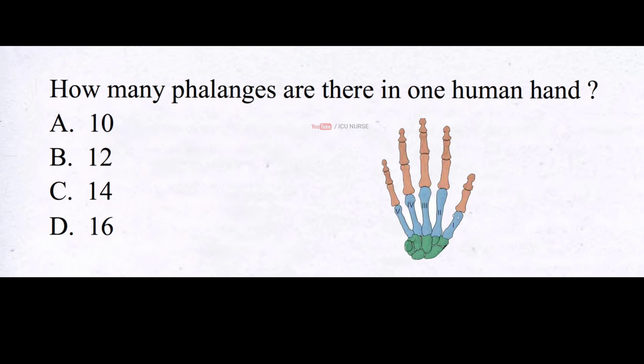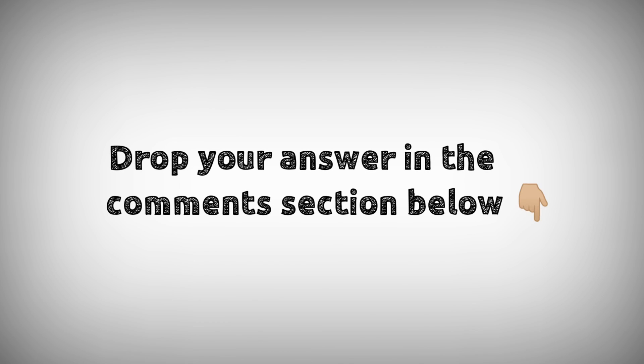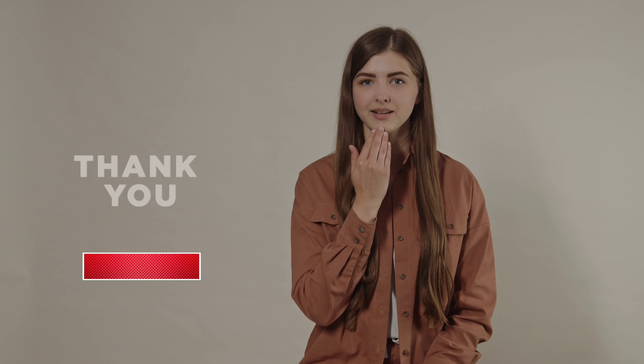How many phalanges are there in one human hand? A. Ten, B. Twelve, C. Fourteen, D. Sixteen. And the correct answer is D. Drop your answers in the comment section below. For downloading PDF content and for the latest updates, follow our Telegram channel — the link is given in the description below. If you like this video, don't forget to hit that like button. Thanks for watching.